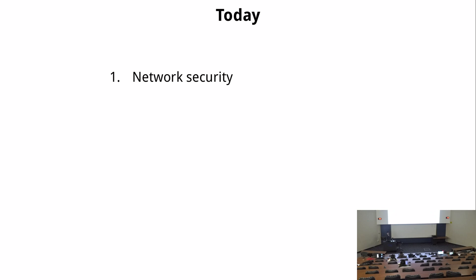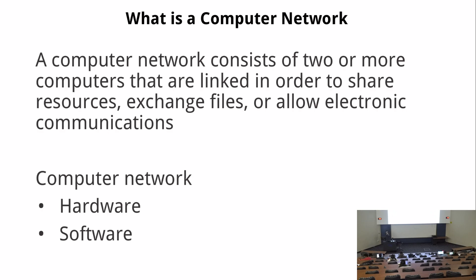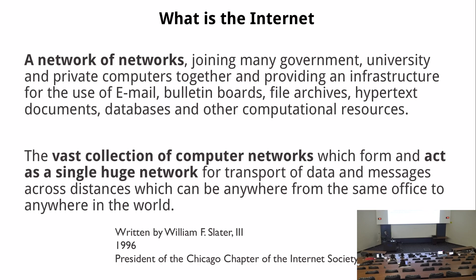Basically, as long as you have two computers and connect them together, we call that a computer network. Of course, there are billions of devices connected to the internet right now. For all computer networks — smaller, isolated ones, or bigger ones — there are network hardware and network software. The internet is not only a network of computers, it's also a network of networks, with subnets.